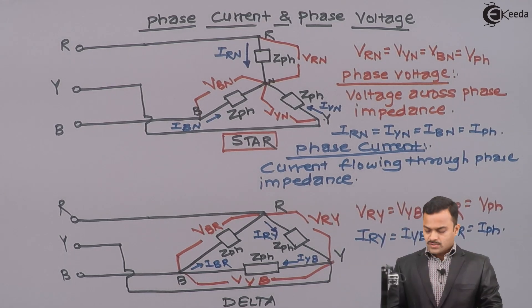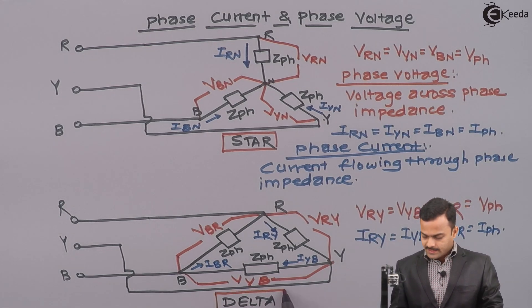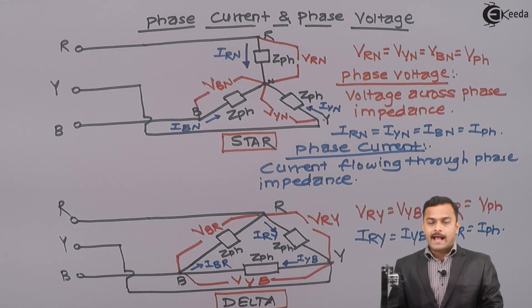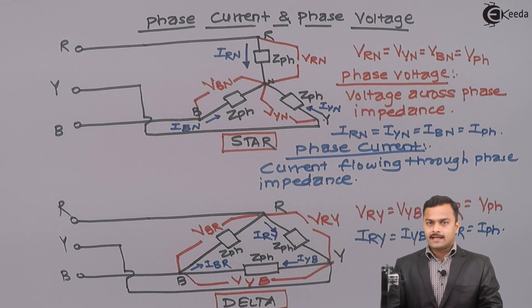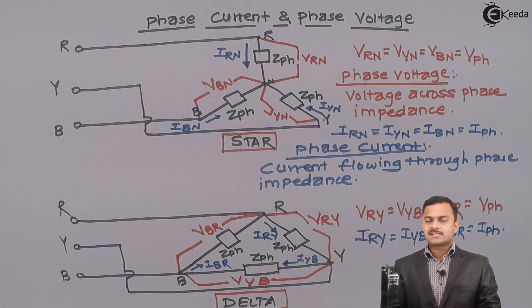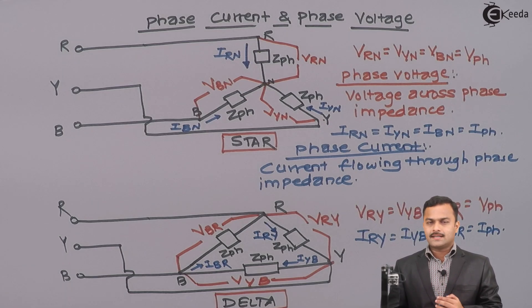So it is very important to understand phase current and phase voltage in the case of star and delta, as well as line voltage and line current, because in subsequent derivations all these concepts are going to appear. We have to establish the relationship between line quantities and phase quantities for star connected load as well as delta connected load. Thank you.